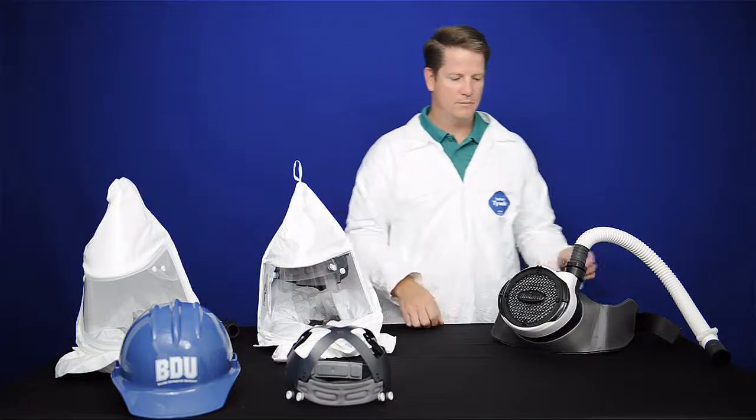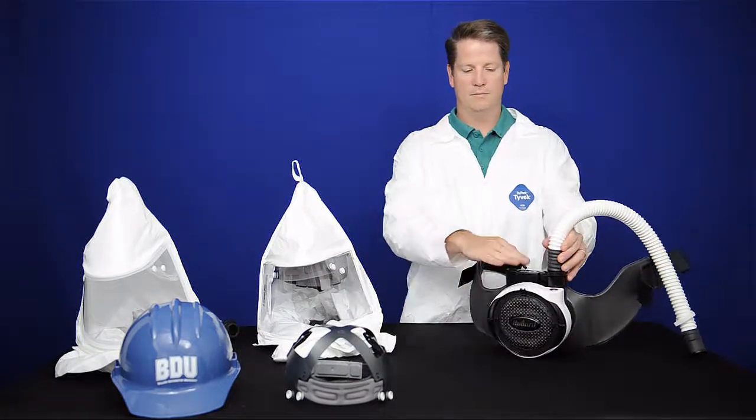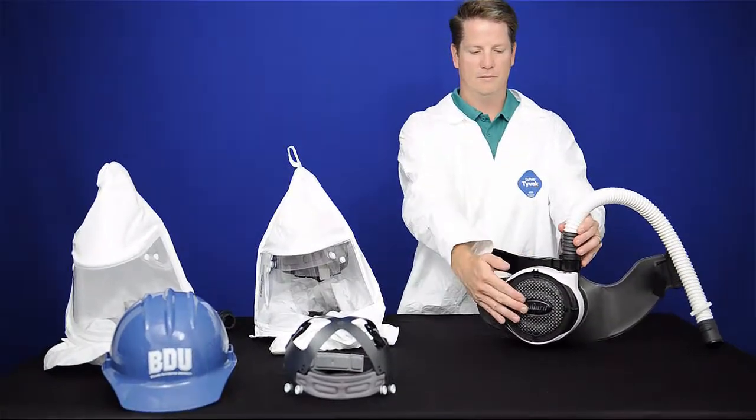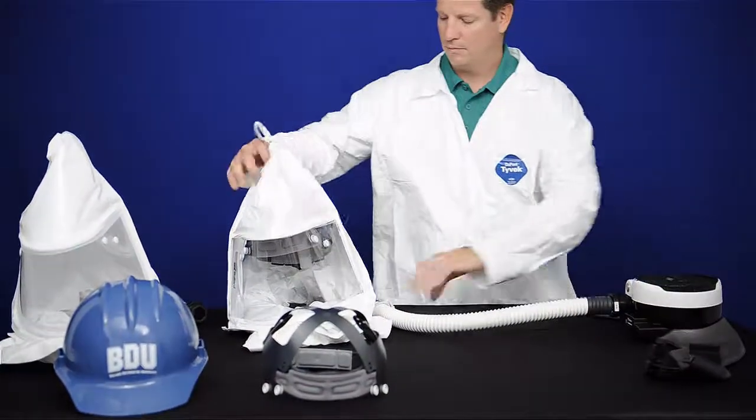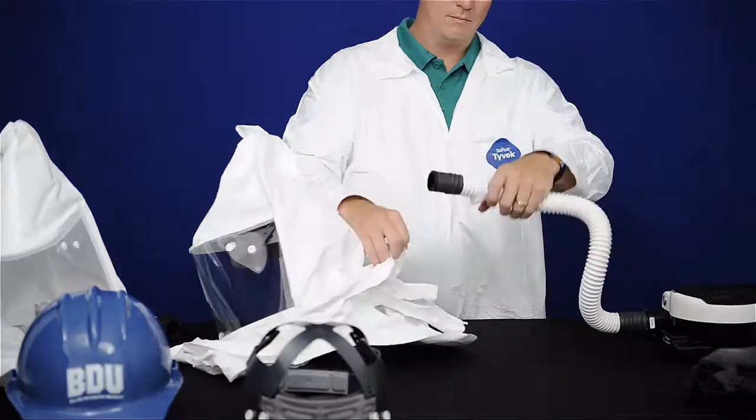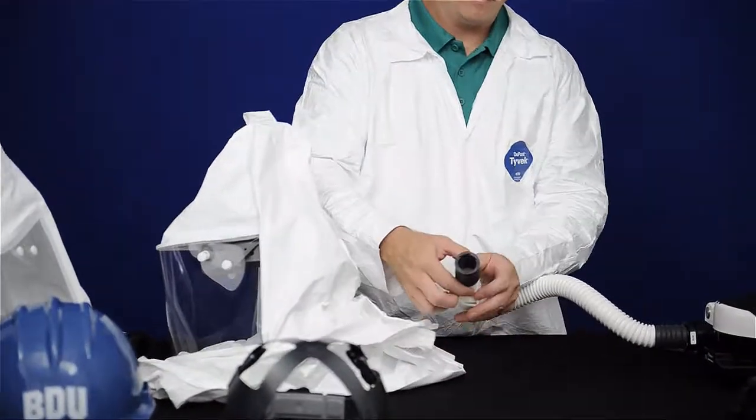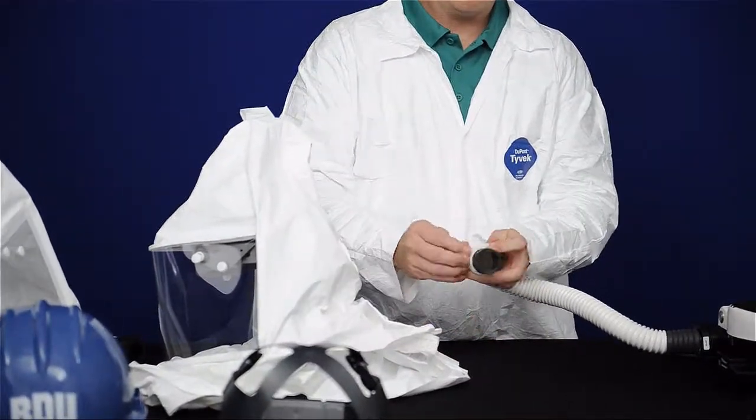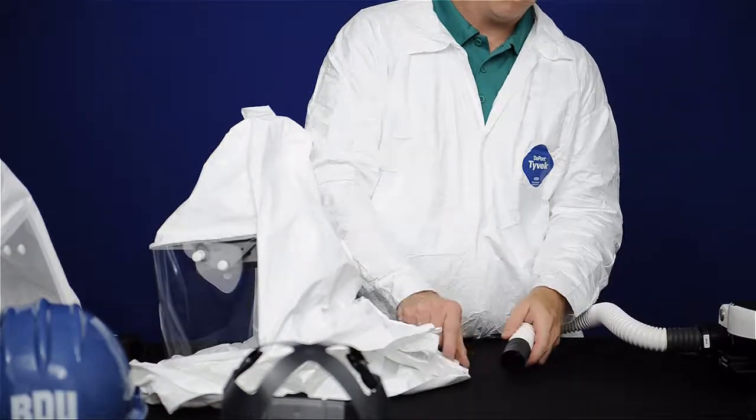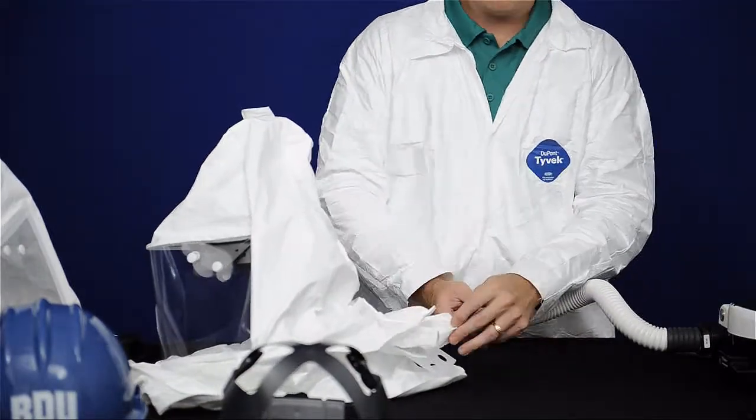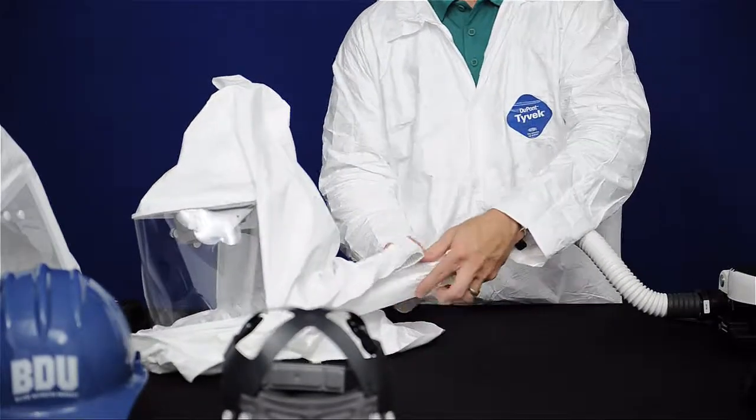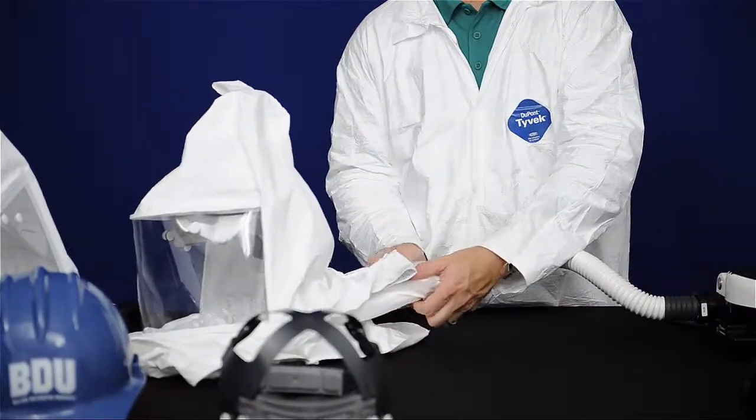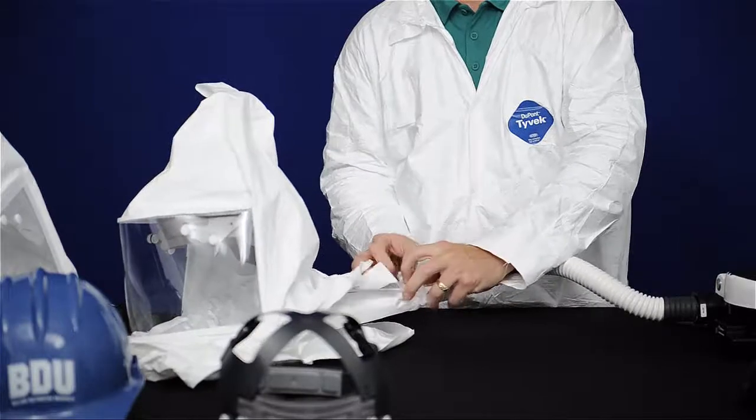With the PAPR belt, battery, breathing tube and filter installed onto the blower, insert the breathing tube approximately 5 inches into the air entry sleeve and secure with the clamp by squeezing until tight.